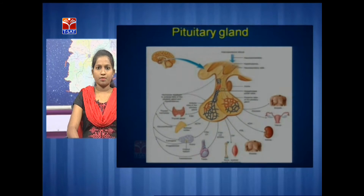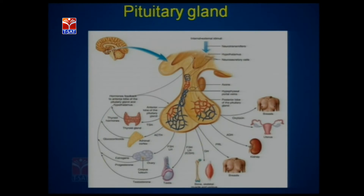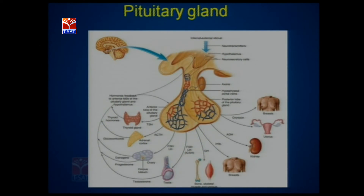Here is the diagrammatic representation of the pituitary gland, where you can see it is located in the brain, attached to the hypothalamus by a stalk called the infundibulum. You can also see the two lobes of the pituitary gland, which secrete nine different hormones — seven hormones secreted by the anterior lobe and two regulated by the posterior lobe. This is all about the master gland of our body, the pituitary gland.